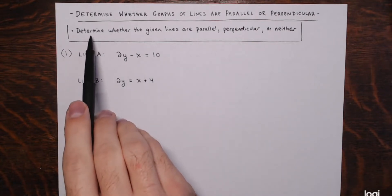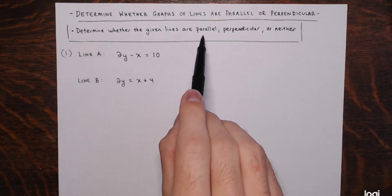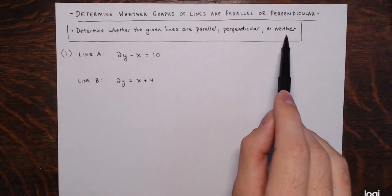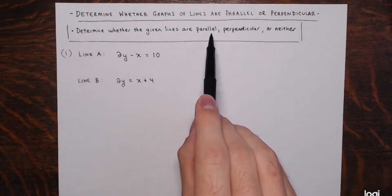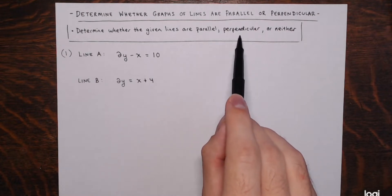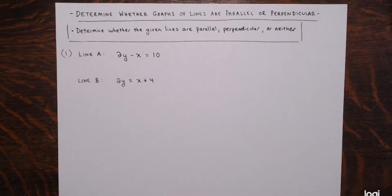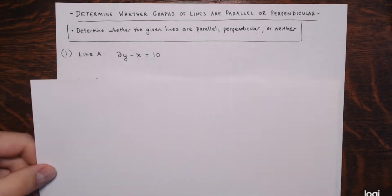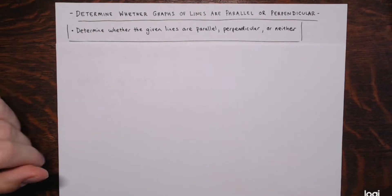The instructions are to determine whether the given lines are parallel, perpendicular, or neither. Two lines can be parallel, they can be perpendicular, or neither of those things. Before I get into example one, I want to talk about what it means for two lines to be parallel, and what it means for two lines to be perpendicular.